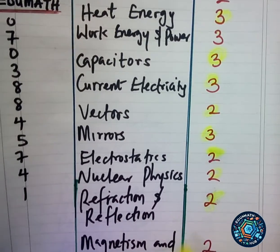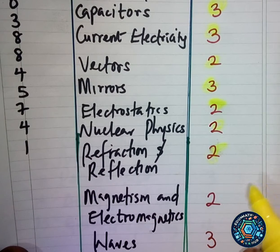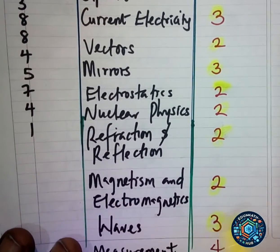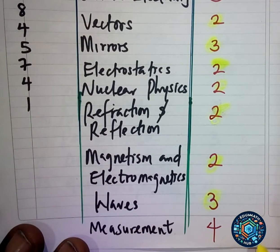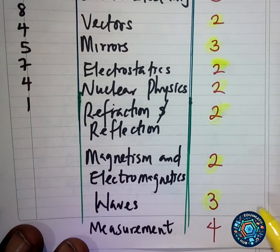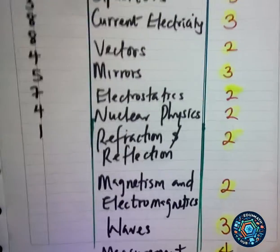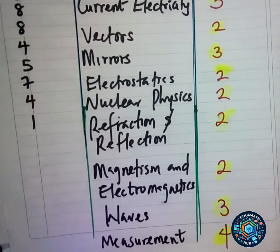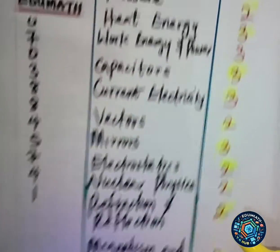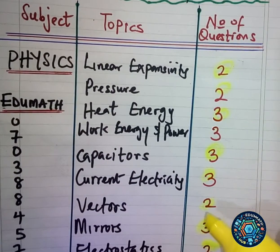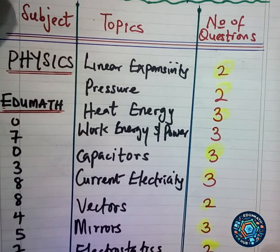Under reflection and refraction, including Snell's law, two questions came out — focus on that. Magnetism and electromagnetism, covering angle of declination, angle of dip, and how to form a magnet, had two questions. Under waves, three questions came out. Under general measurements — instruments used to measure physical quantities like weight and mass, and dimensional analysis such as the dimension of power — four questions came out. Put your strength on these high-frequency topics for the main examination.